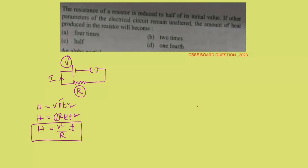Since the other parameters of the electrical circuit remain unaltered, we keep voltage V fixed. The resistance is changing — the resistor's value is being reduced to half. So we change R but keep V constant. The appropriate equation to use here is H = V²/R × T, because V is the parameter we are holding fixed.